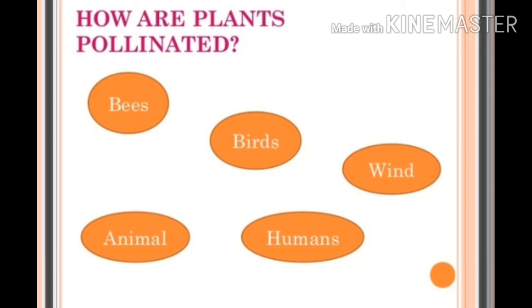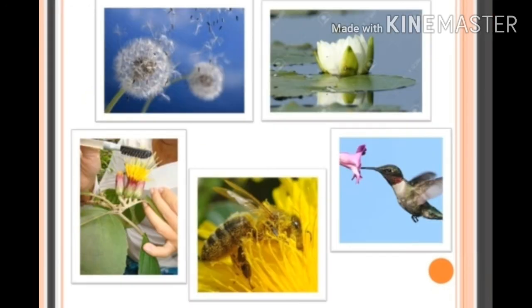For pollination, plants need some external agent — like bees, birds, animals, wind, and humans — and all these help in the pollination of the flower. Flowers that are very small in size and light in weight are carried by the wind. Flowers present in water can be pollinated with the help of water. Birds and insects also help in pollination by transferring pollen grains from anther to stigma.